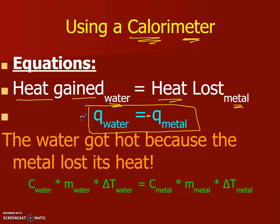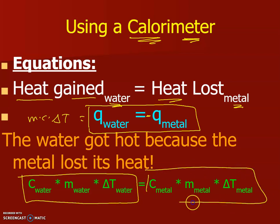If Q equals mc delta T, then the specific heat of the water times the mass of the water and the temperature change of the water in the calorimeter is going to be equal to the specific heat of the metal,